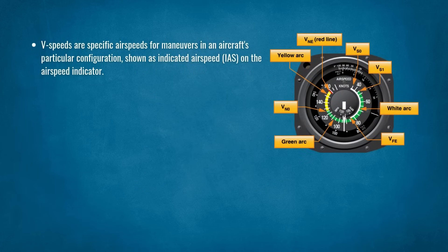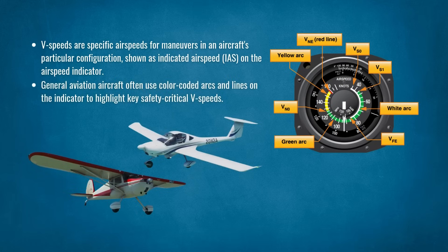V-speeds are specific airspeeds for maneuvers in an aircraft's particular configuration, shown as indicated airspeed on the airspeed indicator. General aviation aircraft often use color-coded arcs and lines on the indicator to highlight key safety-critical V-speeds.